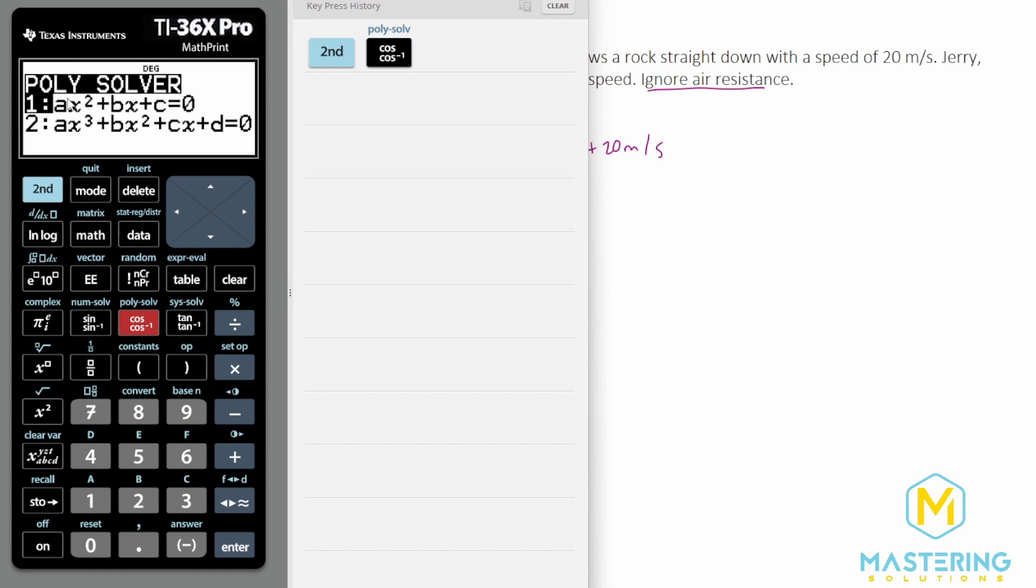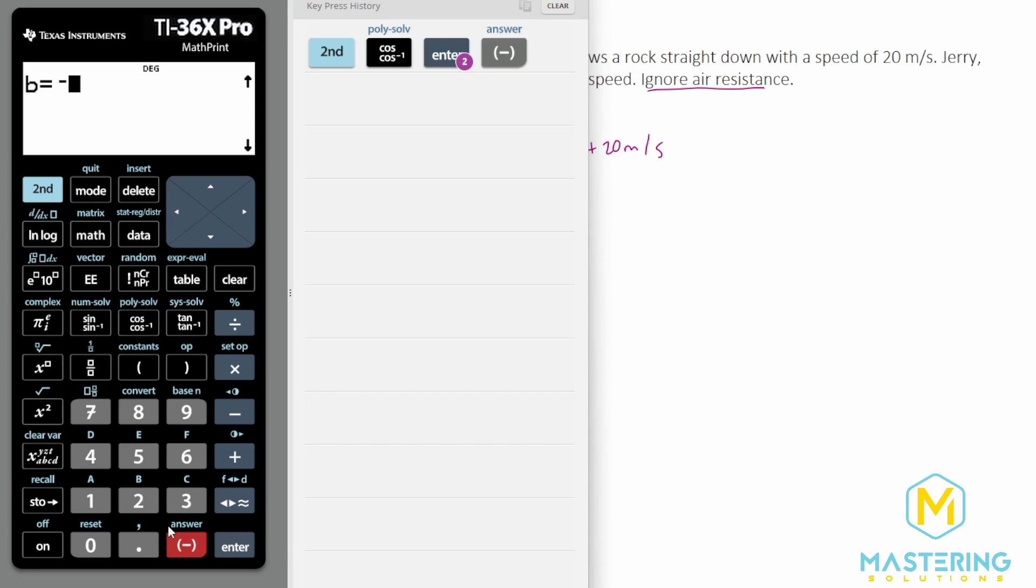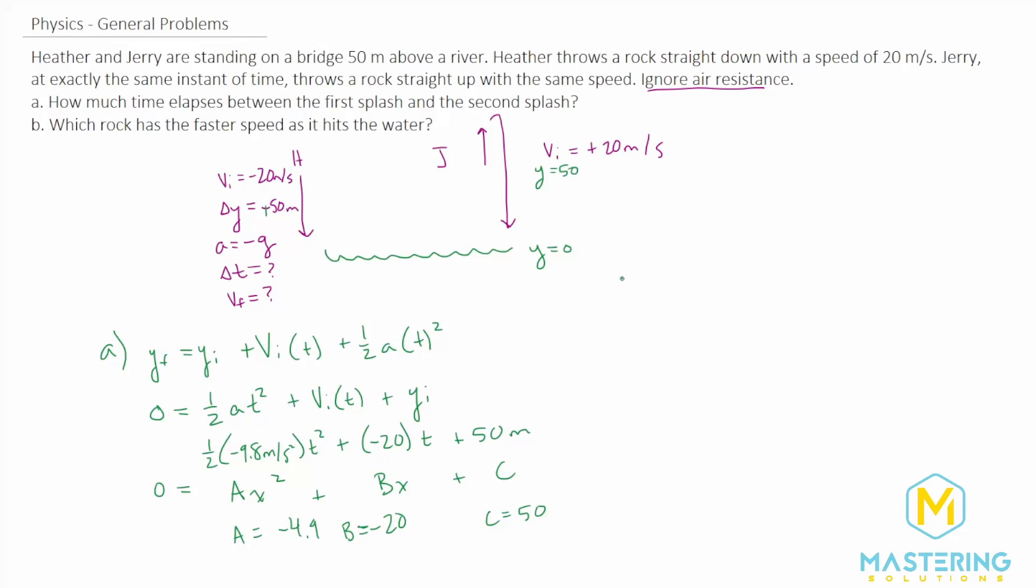We go to poly solver ax squared plus bx plus c. Our a is negative 4.9, the b we said was a negative 20 for Heather, and then the c is going to be 50 for our delta y. So the time is either 1.75 or it's a negative 5.8, but obviously we can't have a negative time. So the time for Heather is 1.75 seconds for how long her rock is in the air.